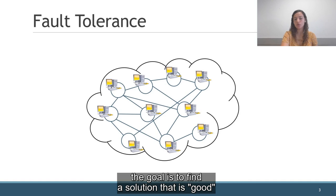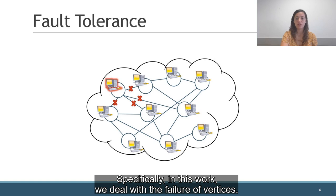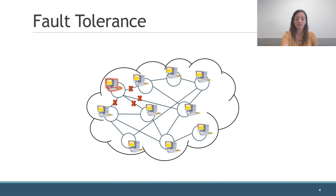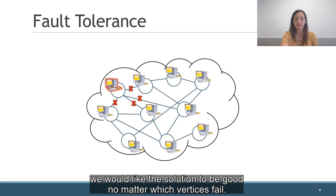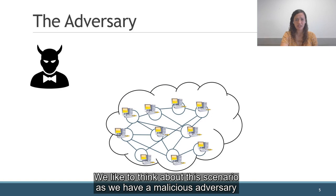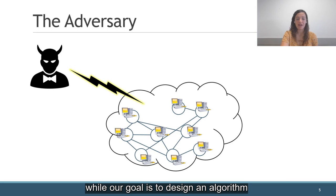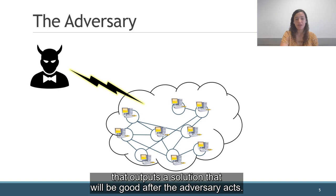Specifically, in this work, we deal with the failure of vertices. Note that when a vertex fails, it is removed from the graph along with all its adjacent edges. In general, when dealing with faults, we would like the solution to be good no matter which vertices fail. We like to think about this scenario as having a malicious adversary that can remove a bounded number of vertices from the graph, while our goal is to design an algorithm that outputs a solution that will be good after the adversary acts.